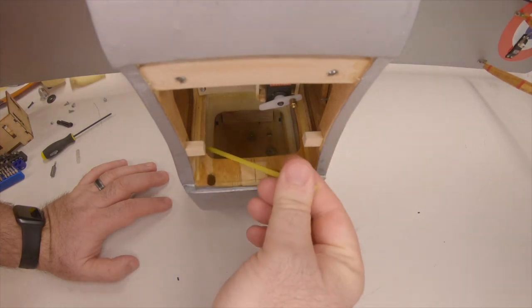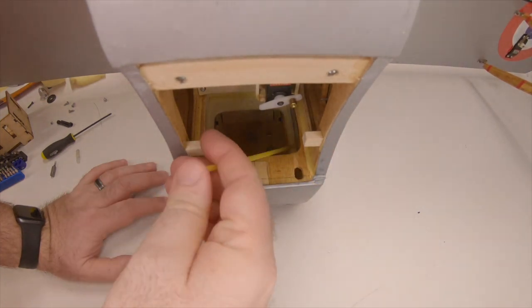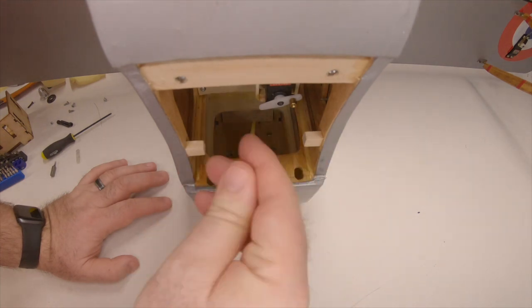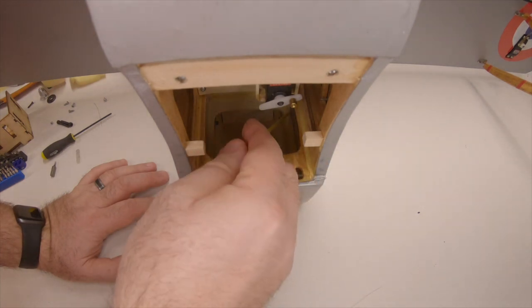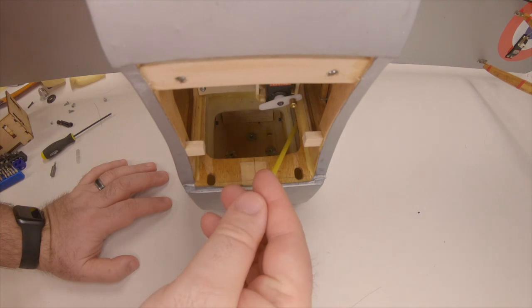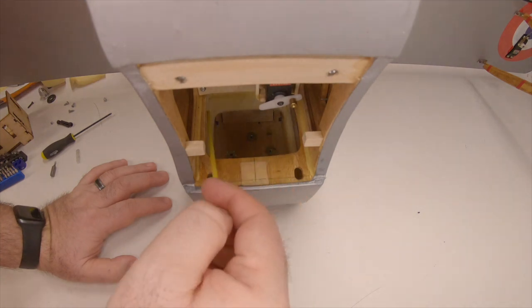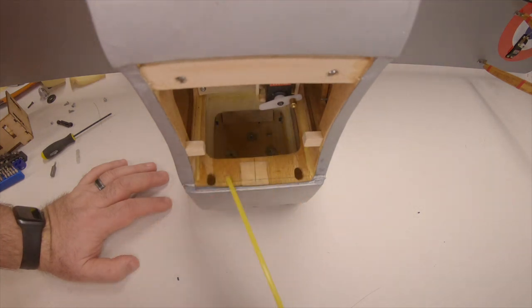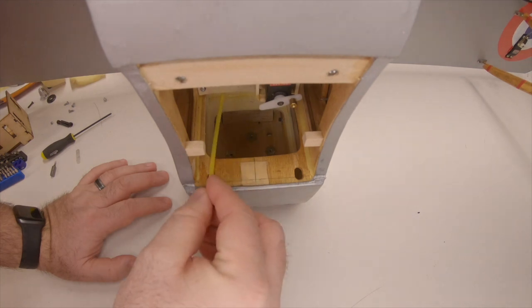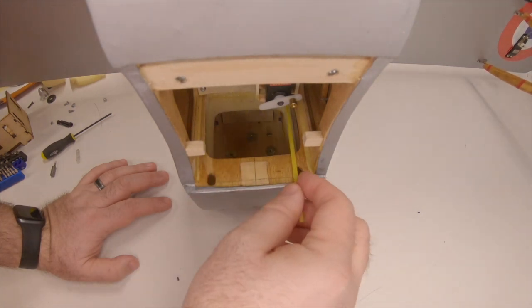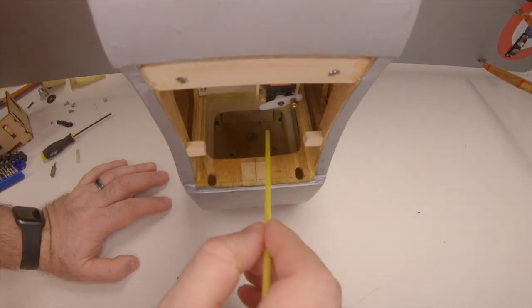Right now all there is is a former in here on both sides. If I make a couple of box sides out of some light ply and make this kind of boxed off inside here behind the F2 former, then my batteries will have something I can stick velcro to so when I stick my batteries up in there they'll have something to velcro to right here.